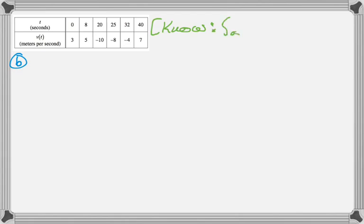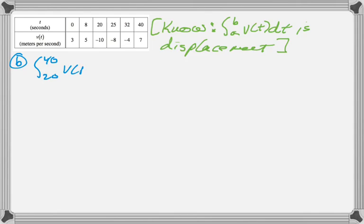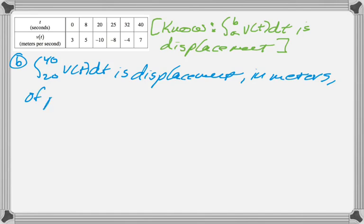In part B, I need to use correct units to explain what the integral from 20 to 40 of V(t)dt is. You have to walk in knowing that the integral of velocity is displacement, so now I'm really just going to write that in the context of this problem. So, it's the displacement in meters of the particle, or whatever it is that's moving,